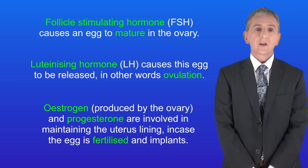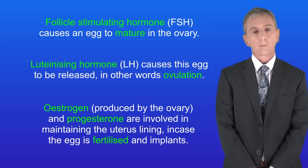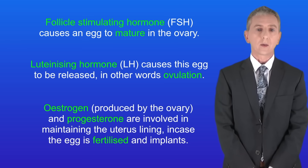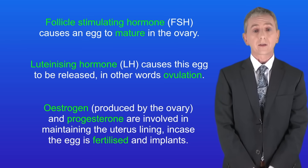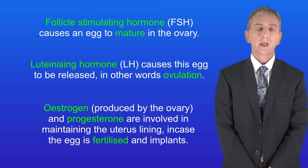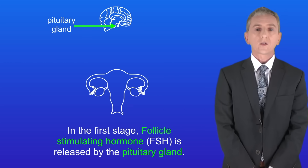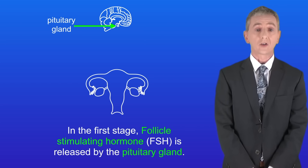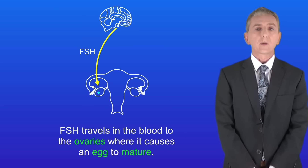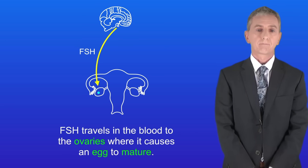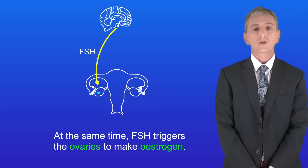Foundation tier students can stop watching now. However higher tier students need to keep watching — we're going to look at how these hormones interact in the menstrual cycle. In the first stage, follicle stimulating hormone or FSH is released by the pituitary gland. FSH travels in the blood to the ovaries where it causes an egg to mature. At the same time FSH triggers the ovaries to make estrogen.